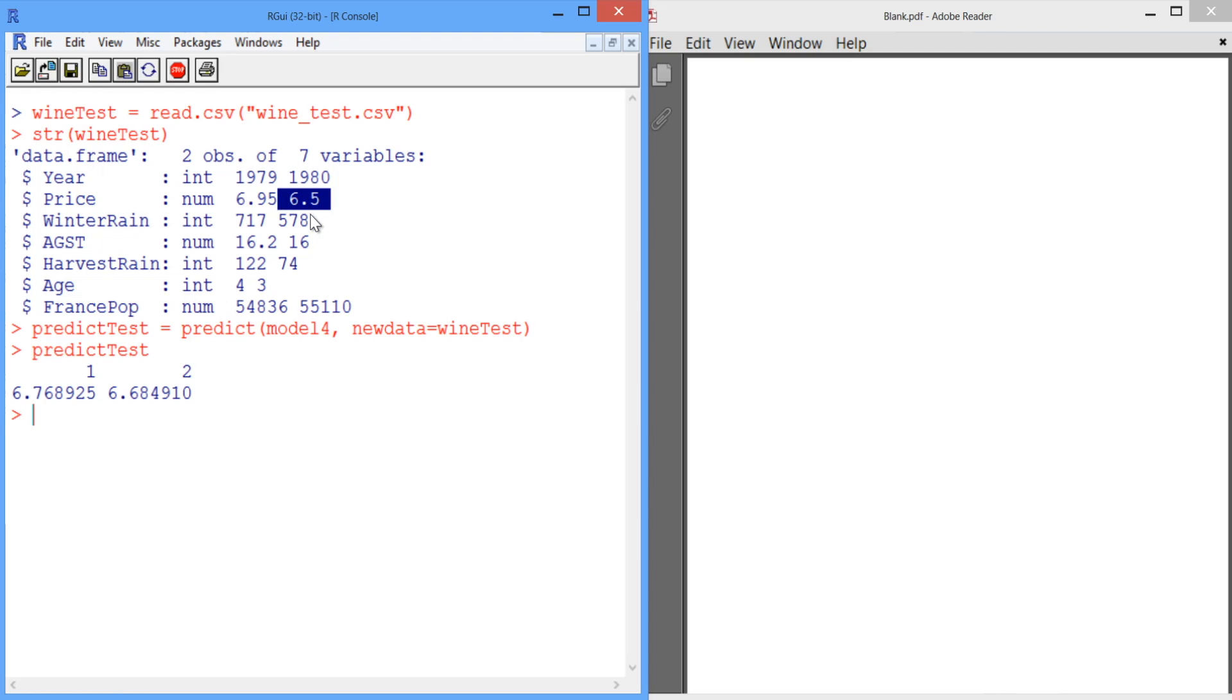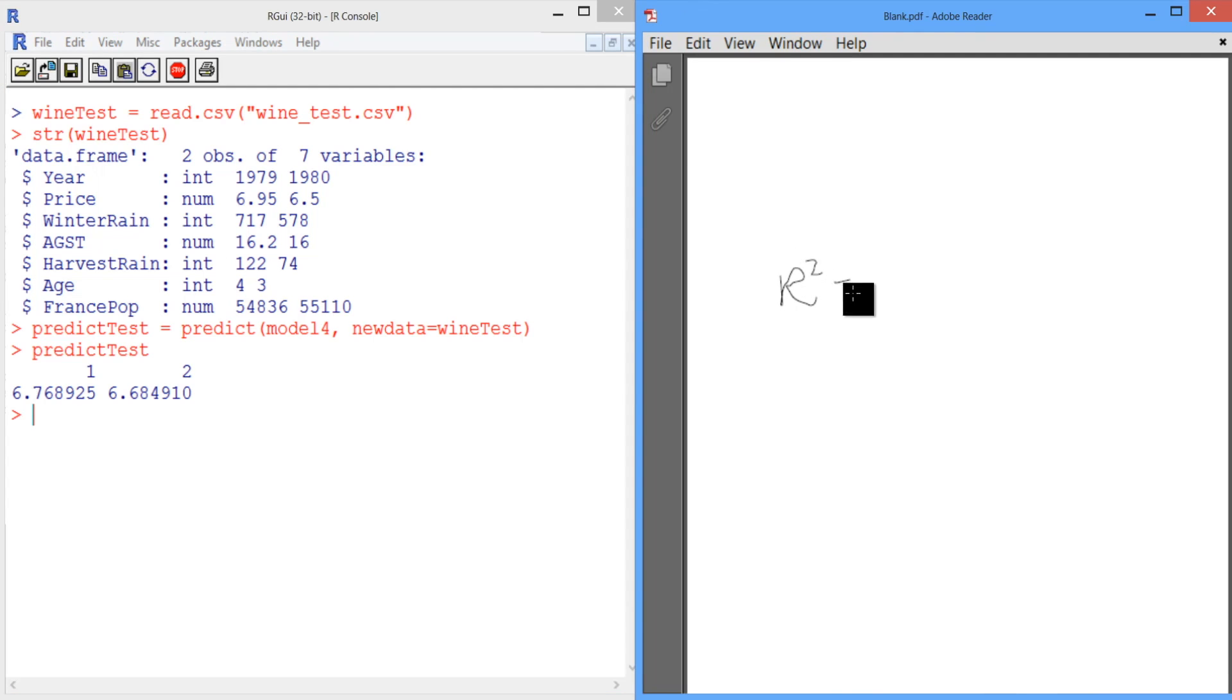So it looks like our predictions are pretty good. Let's verify this by computing the R² value for our test set. Recall that the formula for R² is R² equals 1 minus the sum of squared errors divided by the total sum of squares.